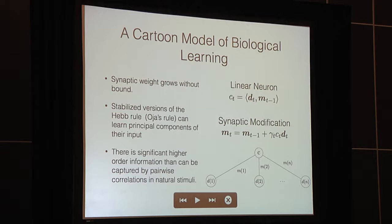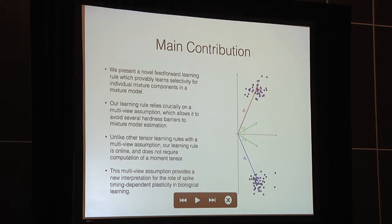However, this is still basically only going to learn information contained in the correlations between the input dimensions. There's significantly higher-order information in natural image statistics than can be captured by these pairwise correlations. Our goal is to try to learn that.